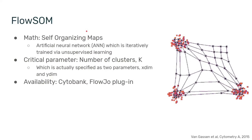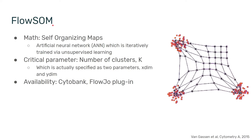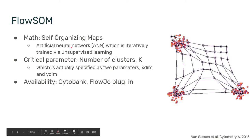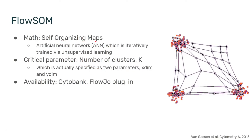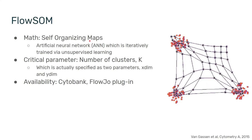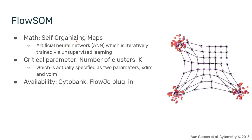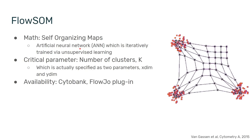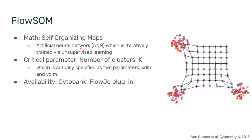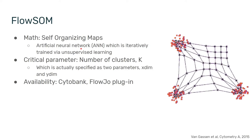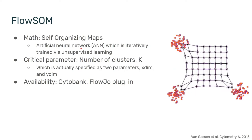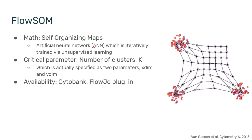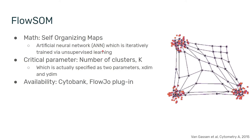Starting with a fan favorite: the FlowSOM algorithm. It was published by Van Gassen et al. in 2015, and it's based on a much older algorithm called Self-Organizing Maps, also referred to as Kohonen Maps. A self-organizing map trains an artificial neural network — the same neural networks known from deep learning. However, while in deep learning the network is trained on classified data, for self-organizing maps it is unclassified, and we're just trying to fit the network to the data based on distances.